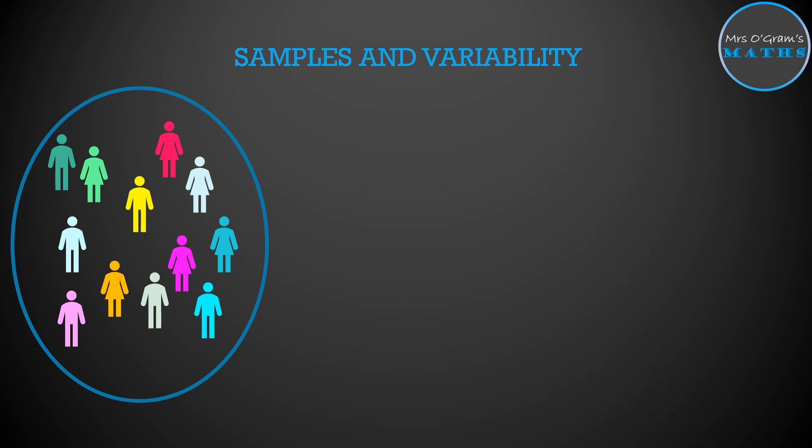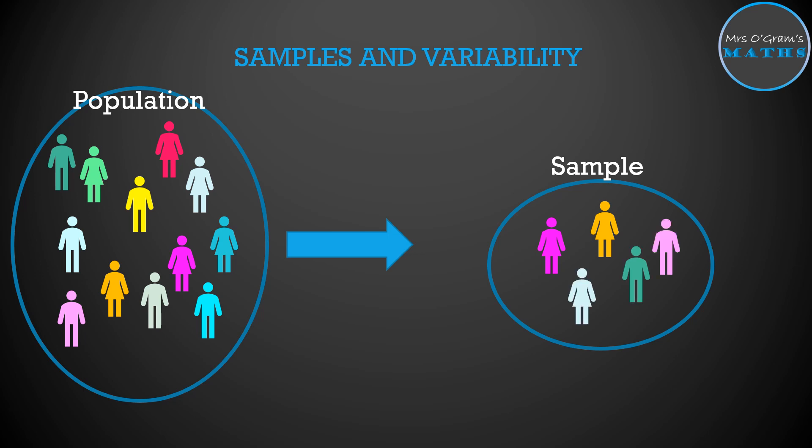Now if we run that again and from the same population we took another sample, we might end up with some different people. In fact we're almost certainly going to end up with some different people if we took the sample again. We would calculate our sample statistic again, so in this case the median amount of sugar, and we would expect to get something that would be a little bit different from the first time that we took our sample.